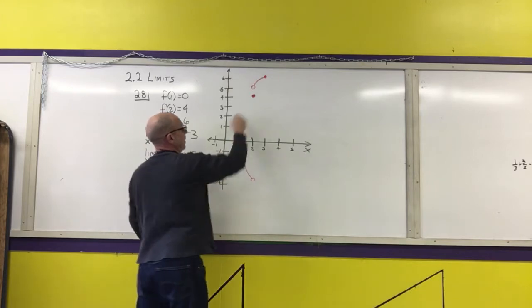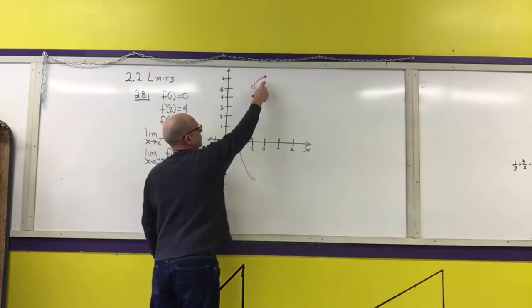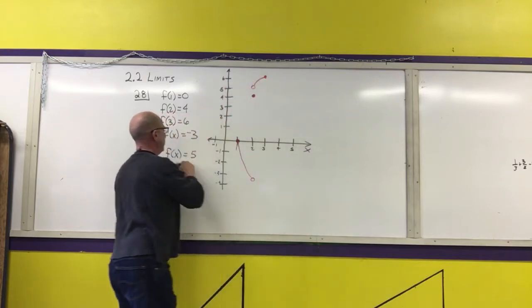And as I approach 2 from the right, my graph does approach the y value of 5.